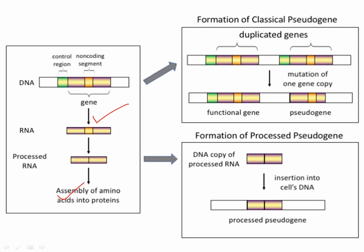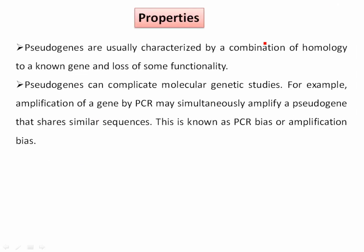Pseudogenes are of two types, which I will discuss in detail. The first is processed pseudogenes and the second is non-processed pseudogenes. Pseudogenes formed after reverse transcription are called processed pseudogenes, while those formed after a duplication event are called non-processed pseudogenes.